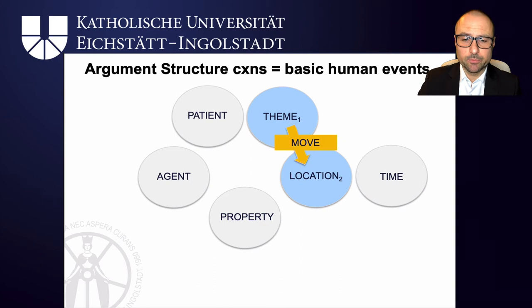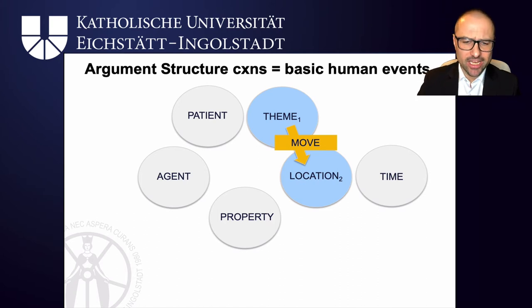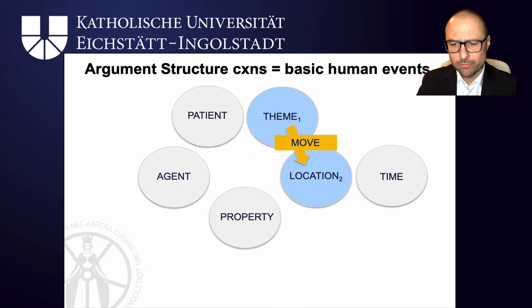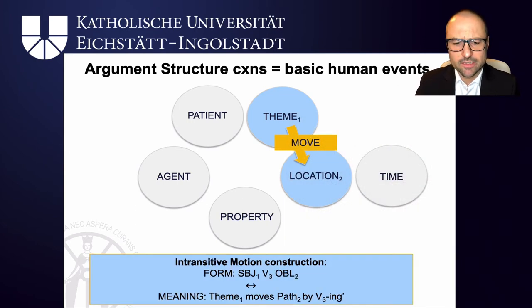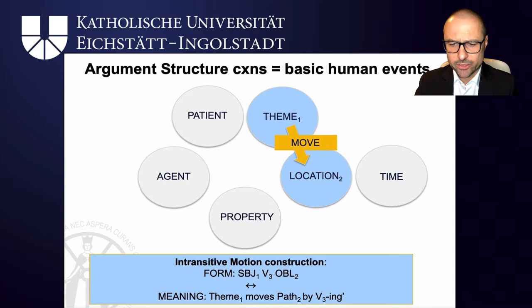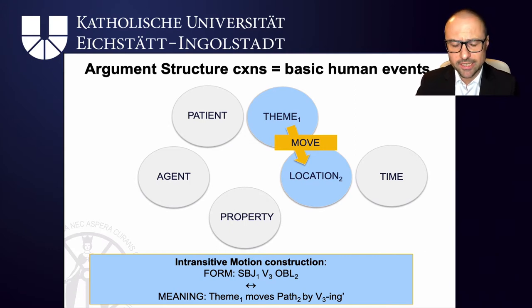Sometimes you will just see a participant moving in space, and they or the object isn't really affected — so it doesn't change its properties or state. He ran out of the house, the fly buzzed into the room, people strolled along the river. For these situations you have the intransitive motion construction: a subject, verb, and oblique slot, which specifies that a theme moves along a path by the verbal action. He moves out of the house by running, the fly moves into the room by buzzing. The oblique is mostly realised by a prepositional phrase in English and can be a path, a goal, a source, or locations involved in movement.